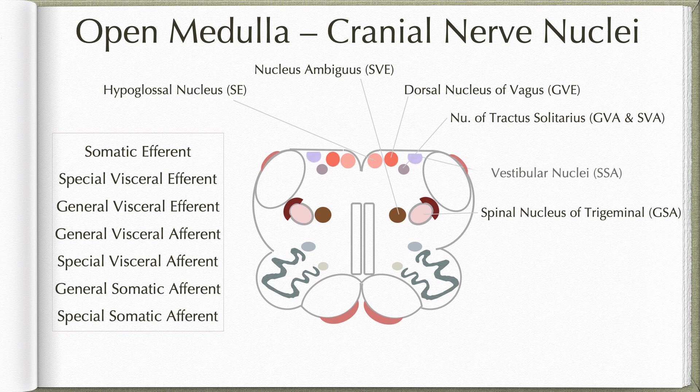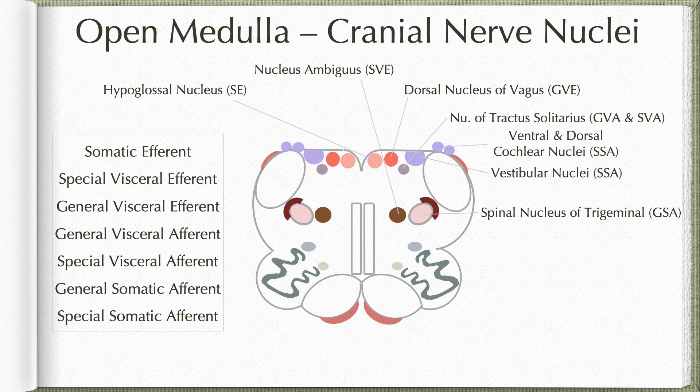Coming to the special somatic afferent column, that is represented by the vestibular nucleus present on the lateral aspect of the posterior surface. This represents the vestibular area in the floor of the fourth ventricle. In addition to the vestibular nucleus, we also have ventral and dorsal cochlear nuclei, which also represent the special somatic afferent column. They are located on the posterior aspect of the inferior cerebellar peduncle, lateral to the vestibular nucleus. The dorsal cochlear nucleus forms a very prominent elevation on the inferior cerebellar peduncle known as the auditory tubercle.